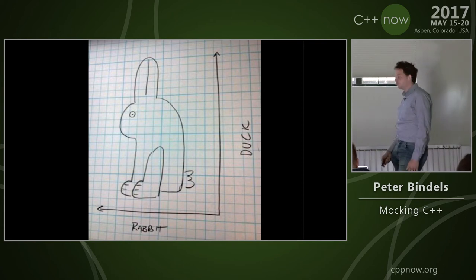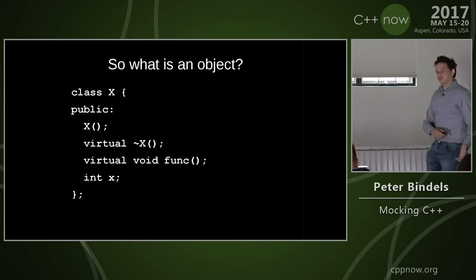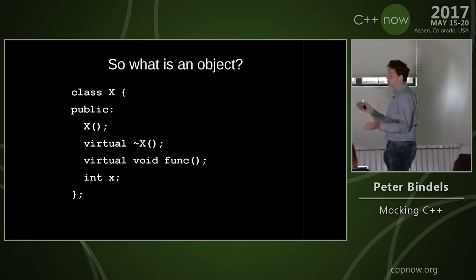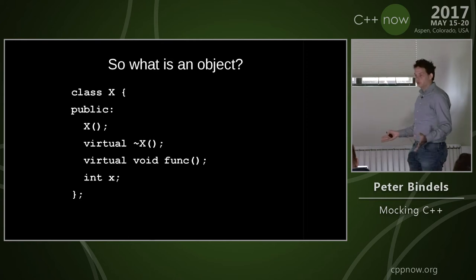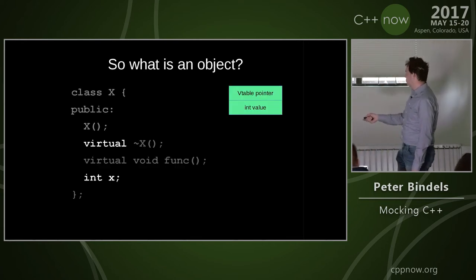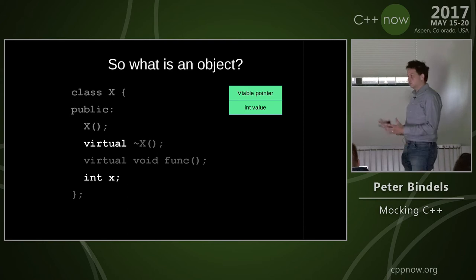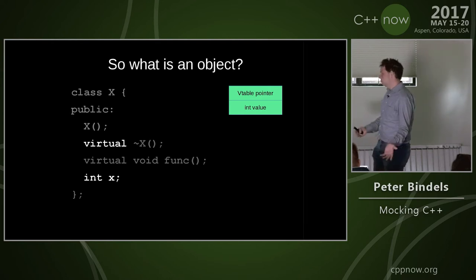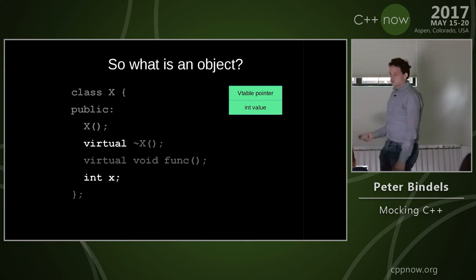What is an object actually? What does my mock object have to satisfy at an application binary interface level? I made a simple class: class X, it has a constructor, a virtual destructor, a virtual function, and one data member. If I put on my compiler glasses, I see there's a virtual — so I need a vtable. There's an int. The runtime object will be a vtable pointer plus an int — 8 bytes on 32-bit, 16 bytes on 64-bit. That's not too hard.